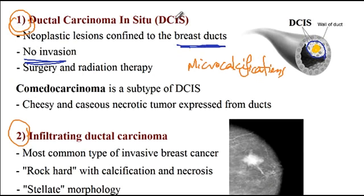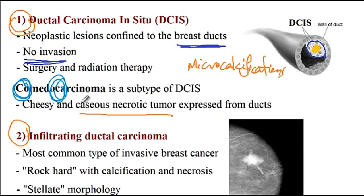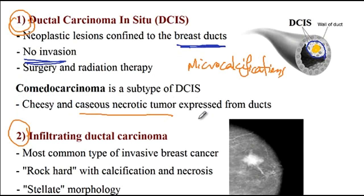Going back to DCIS — there is a subtype called comedocarcinoma, where there are cheesy and caseous necrotic cells inside the ducts. The memory aid: comedocarcinoma is associated with cheesy and caseous necrosis. Comedocarcinoma is a subtype of DCIS presenting with cheesy and caseous necrosis in the tumor cells.